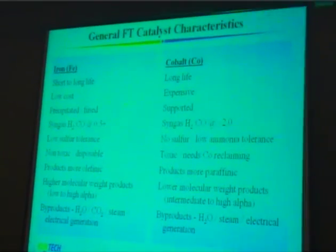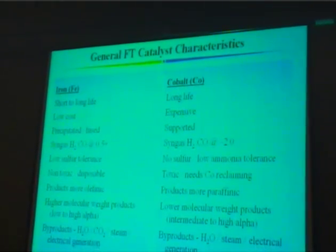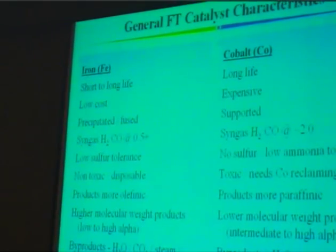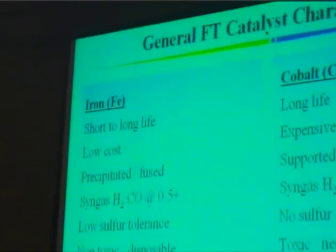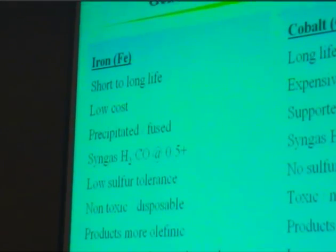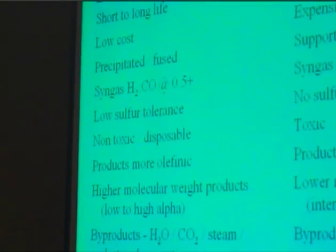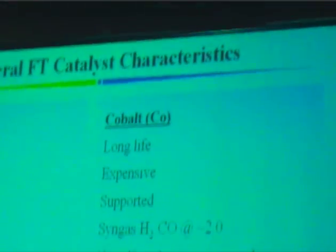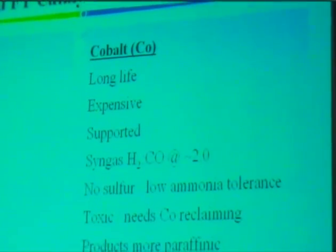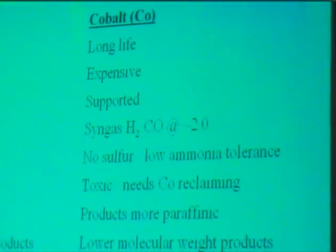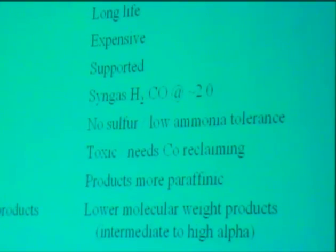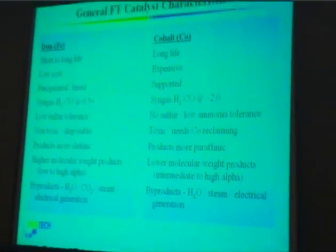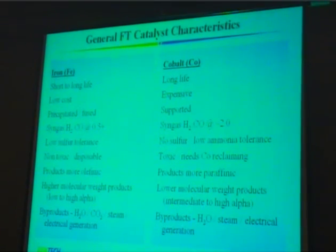Before explaining the differences in these catalysts, I would like to explain a couple of things. Fischer-Tropsch synthesis falls into two categories: low temperature Fischer-Tropsch and high temperature Fischer-Tropsch. Low temperature Fischer-Tropsch is used to produce high molecular weight hydrocarbons, and you can sell it as such or hydrocrack it to diesel fuel. On the other hand, high temperature Fischer-Tropsch synthesis is used to produce light hydrocarbons to produce gasoline and diesel fuel. Iron or cobalt catalyst is used for this purpose.